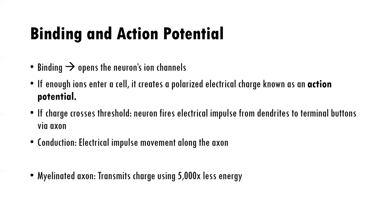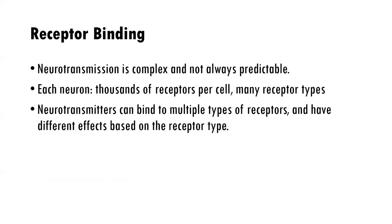What are ions? They're things like calcium and potassium. Ions can be positively or negatively charged. If enough positively charged ions enter a cell, it creates a polarized electrical charge known as an action potential. If that charge crosses the threshold, then the neuron fires an electrical impulse from the dendrites to the terminal buttons via the axon.